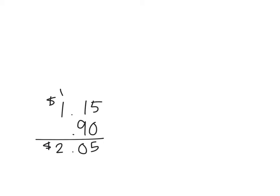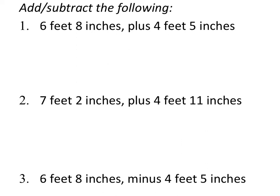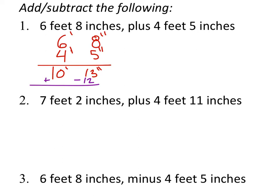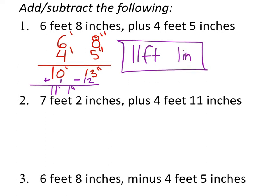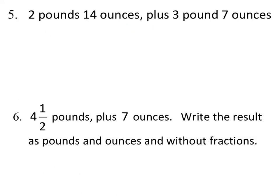For number one, we've got feet. Just like with money, you line up the units: 6 feet 8 inches plus 4 feet 5 inches. Adding gives us 10 feet and 13 inches, but that's too many inches. We take off 12 inches and convert it to a foot, giving us 11 feet 1 inch as our answer.